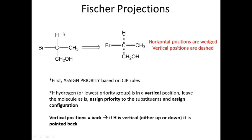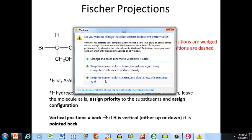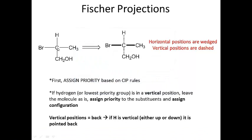A Fischer projection is based on the fact that carbon is tetrahedral. The Fischer projection is essentially looking at the carbon from the top — like if you were holding the molecule in your hand and looking at the carbon from above. In a Fischer projection, the horizontal lines are wedged and the vertical lines are dashed, meaning the vertical lines go back into the page and the horizontal lines come out of the page.